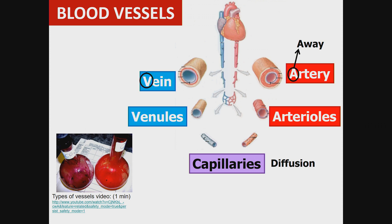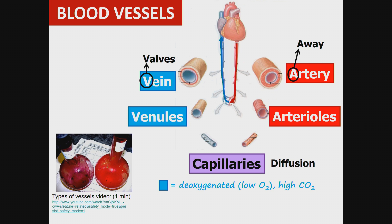Veins have one-way valves. Blood flows away from the heart through arteries and arterioles, through the capillaries, and back up through the venules and veins. The blue represents deoxygenated blood, which means low oxygen and high carbon dioxide, and the red represents oxygenated blood — high oxygen and low carbon dioxide.